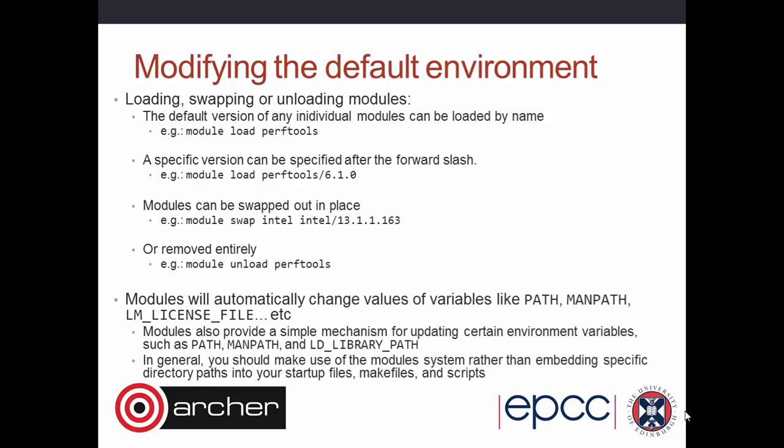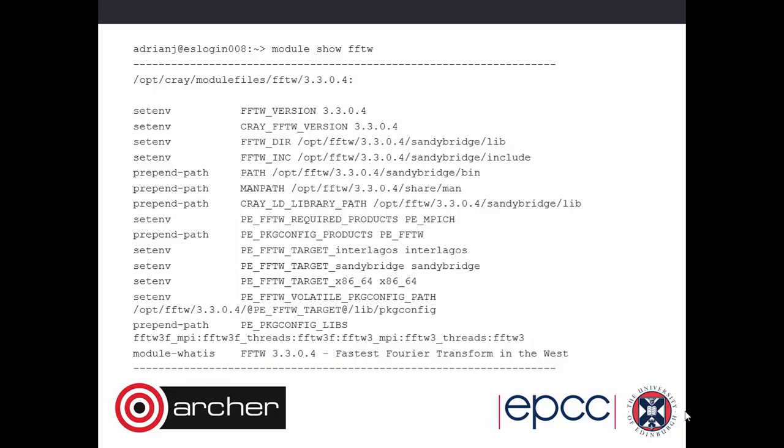If you really want to know what's going on, you can look at a particular package with 'module show'. For example, 'module show FFTW' — FFTW is a package for Fourier transforms, the Fastest Fourier Transform in the West. It shows the current version is 3.3.0.4 and all the things being set — architectures, paths, and such like. You should be able to just link to the FFTW package and pick up the most current version.